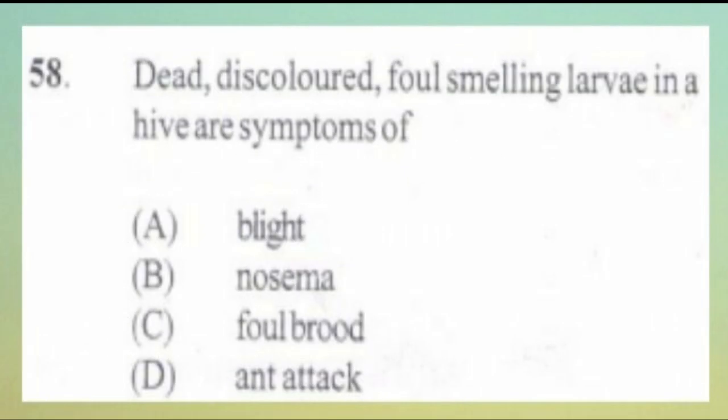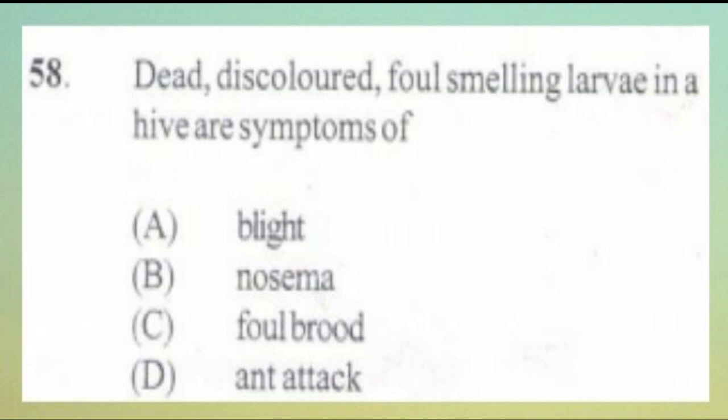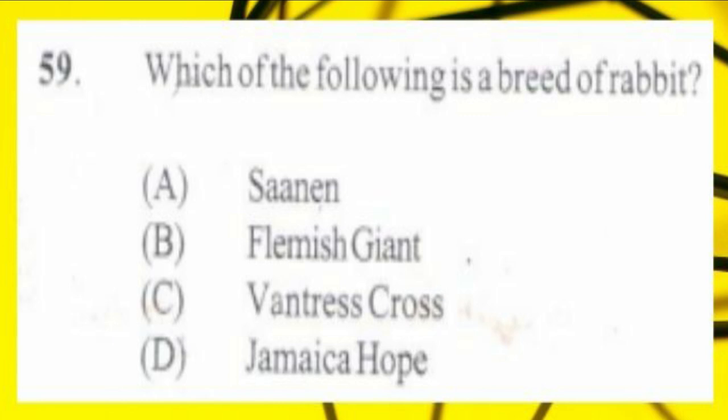Question number 58. Dead, discolored, foul-smelling larvae in a hive are symptoms of: A. Blight, B. Nosema, C. Foul brood, D. Ant attack. The answer is C, foul brood. Question number 59. Which of the following is a breed of rabbit? A. Sinen, B. Flemish Giant, C. Vantress Cross, D. Jamaica Hope. The answer is B, Flemish Giant.